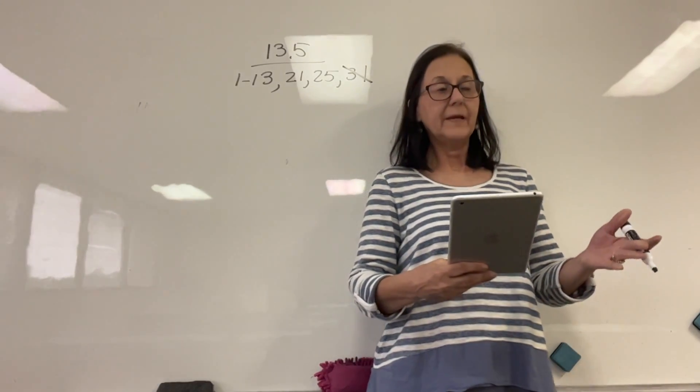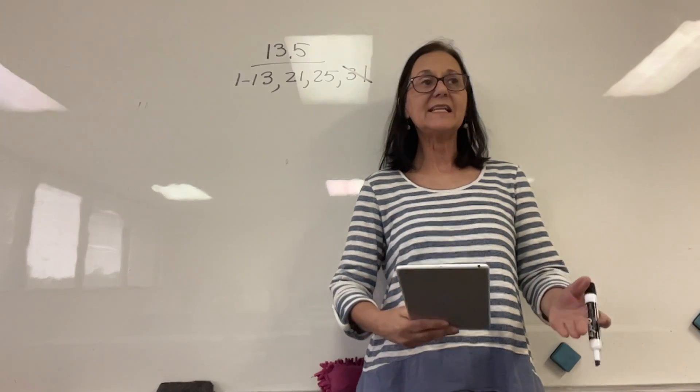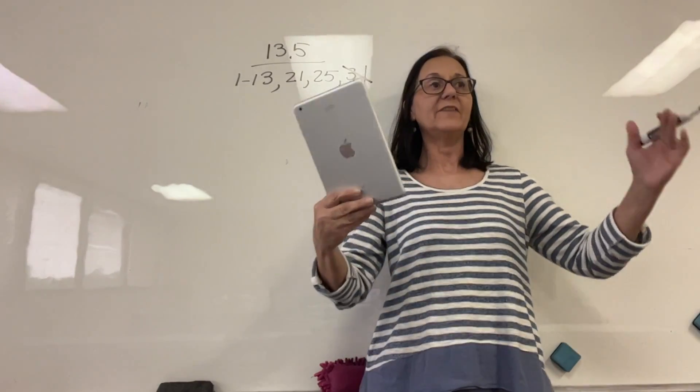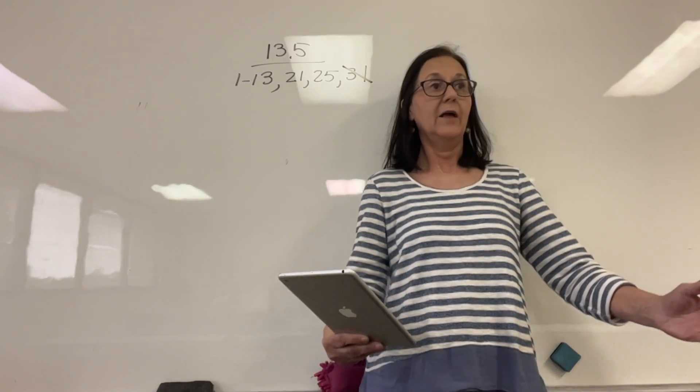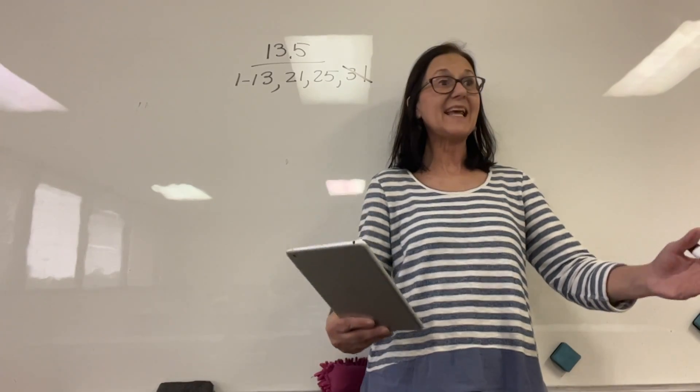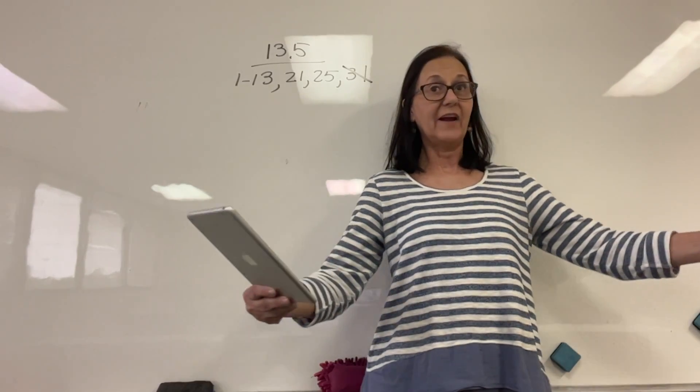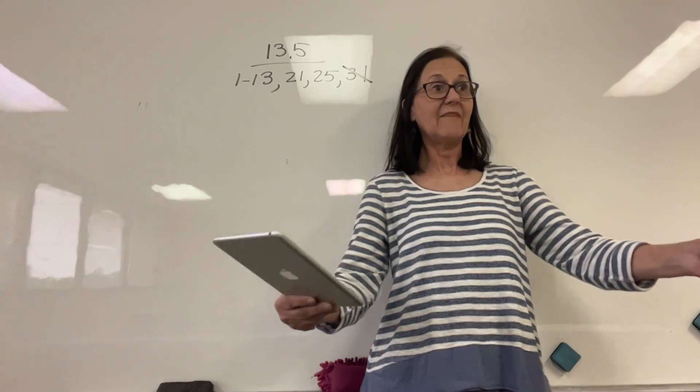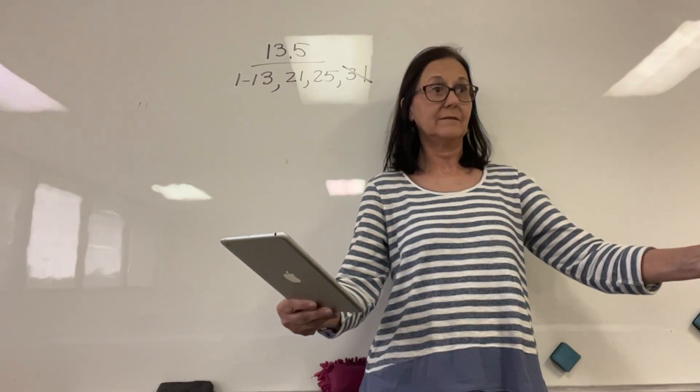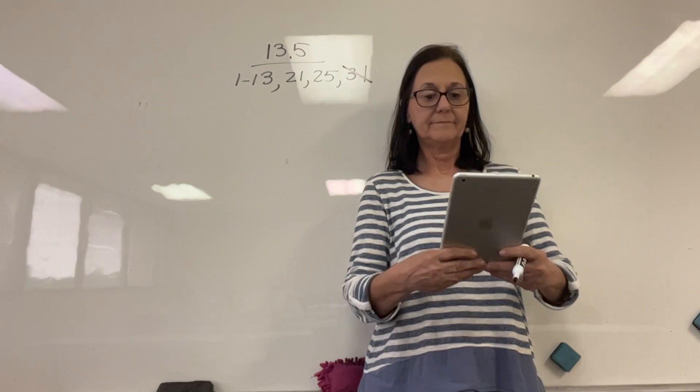Because remember, it's 68, 95, 99.7. They're always going to show you three standard deviations. And the very tails are going to be that 0.15 and 0.15%.